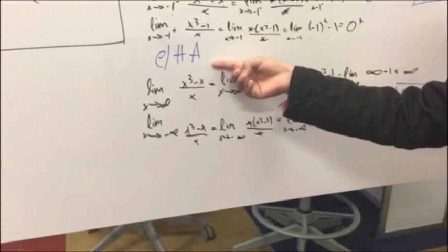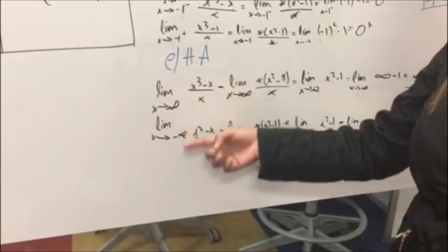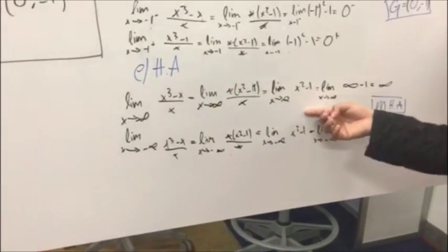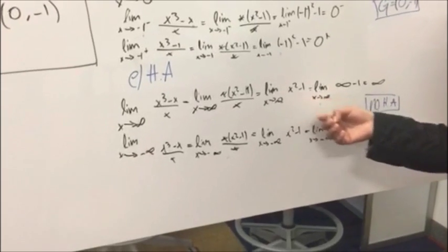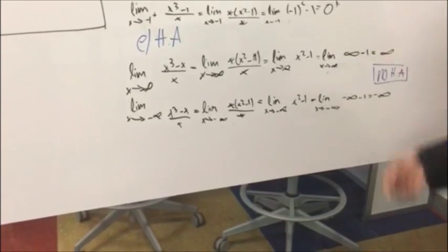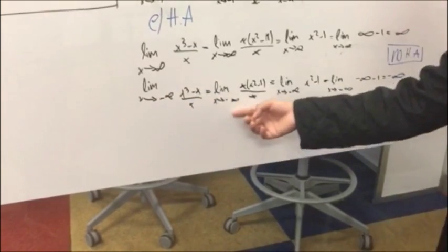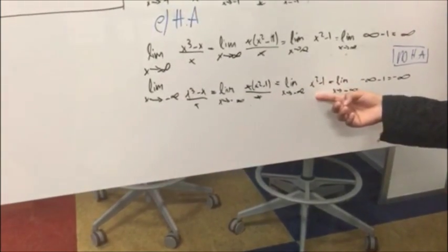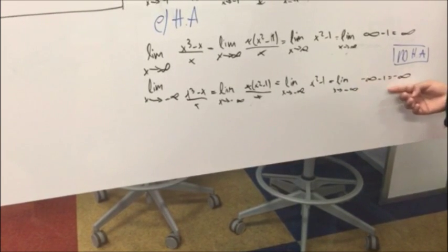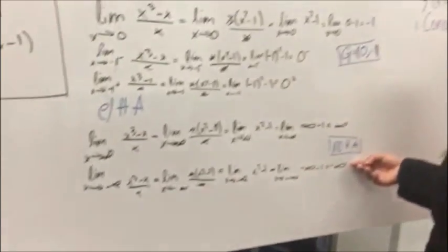For the horizontal asymptote, we evaluate the limit as x approaches positive infinity and negative infinity. Simplifying to x squared minus one, substituting positive infinity gives positive infinity, and substituting negative infinity gives negative infinity. Therefore, there is no horizontal asymptote.